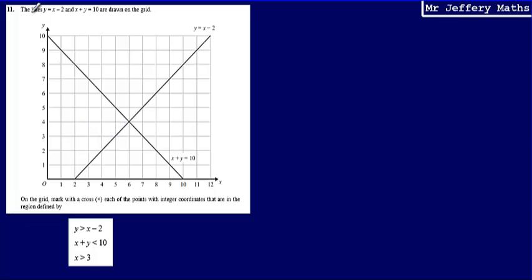This is question 11. Here we're told that the lines y equals x minus 2 and x plus y equals 10 are drawn on the grid, and we can see those here.